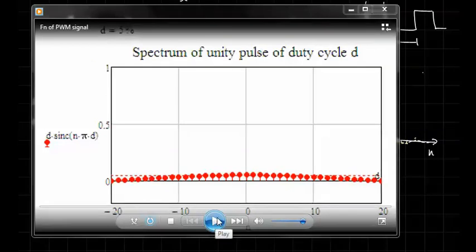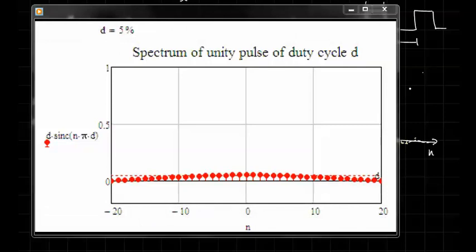All right, here we are showing f of n as a function of n. So I'm going from minus 20 to 20, showing those 40, 41 terms. And we are going to be changing the duty cycle. You see up in the top there, d is the duty cycle. So we're starting at 5%, and we'll go all the way up to 100%.